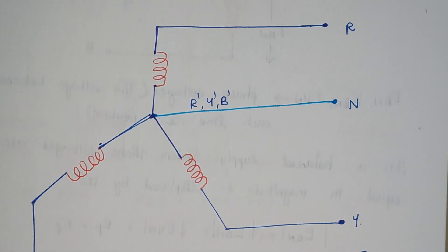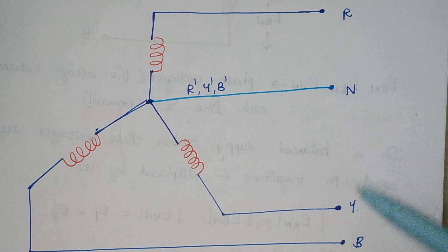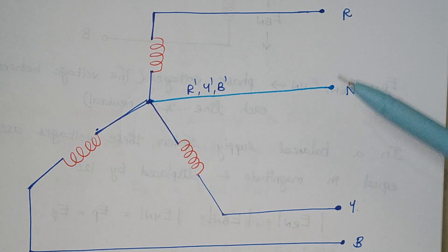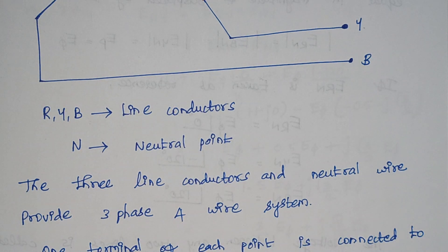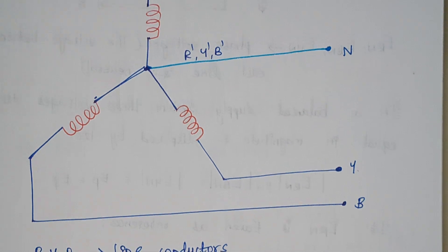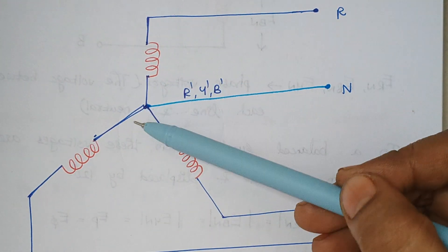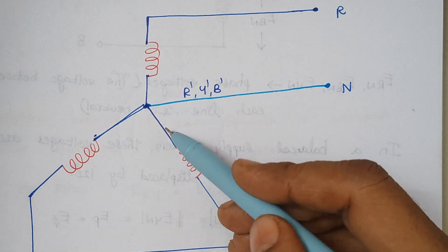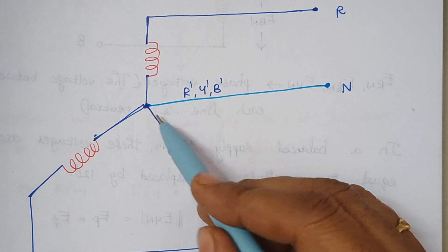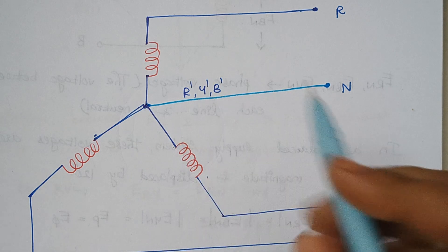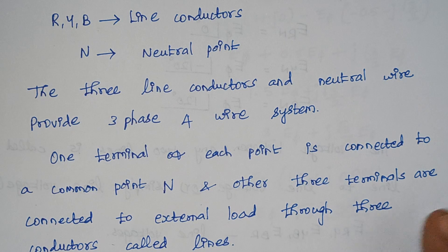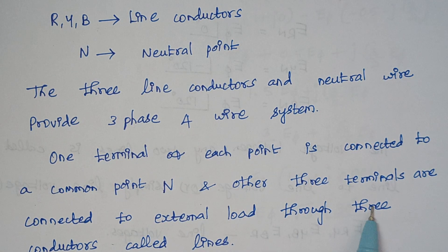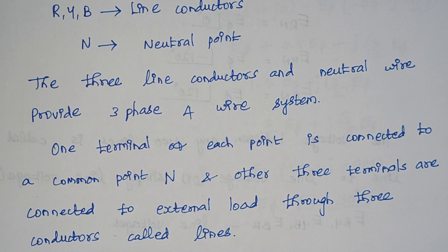The system has three phases: R, Y, and B. But how many wires are we taking? We are using four wires — R, Y, B along with neutral. So this type of system is known as a three-phase four-wire system. One terminal from all three windings is connected to a common point, which is known as the neutral point. One terminal of each winding is connected to common point N, and the other three terminals are connected to the external load through the three conductors known as lines — R, Y, and B.